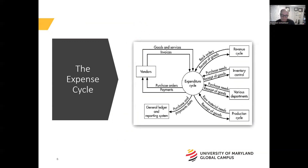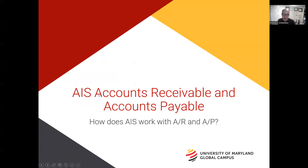We see how the expense cycle interfaces with the revenue cycle, inventory, other departments, and the production cycle. We also see how the expenditures interface with our vendors and the general ledger and reporting system. Now that we have a good understanding of the foundation of the revenue and expense cycles, we need to examine how these cycles interface with accounting information systems.